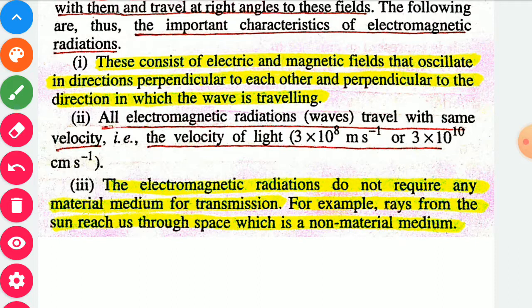The important characteristics of electromagnetic radiation are: First, fields oscillate perpendicular to each other and perpendicular to the direction of travel. Second, all electromagnetic radiations travel with the same velocity — the velocity of light — which is 3×10⁸ meters per second. Third, electromagnetic radiations do not require any material medium for transmission. For example, rays from the sun reach us through space, which is a non-material medium.